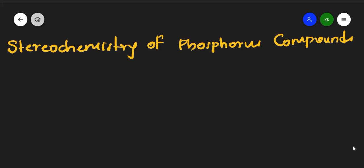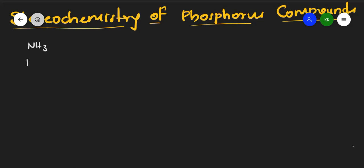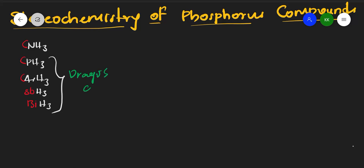Welcome to this class. In this video we are going to discuss the stereochemistry of phosphorus compounds. We have previously studied the stereochemistry of nitrogen. NH3, PH3, and AsH3 all belong to the nitrogen family, which includes nitrogen, phosphorus, arsenic, antimony, and bismuth. Compounds like PH3 and AsH3 are called Drago's compounds because they don't exhibit SP3 hybridization.